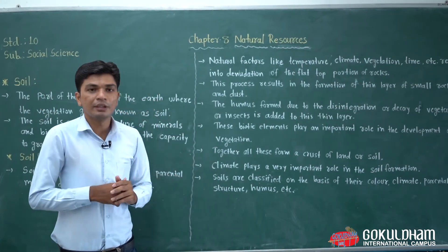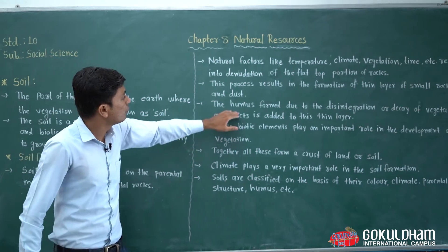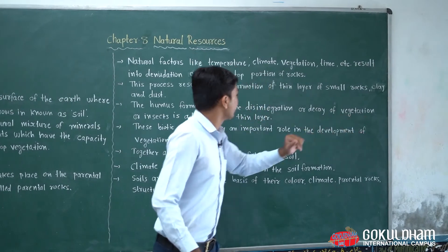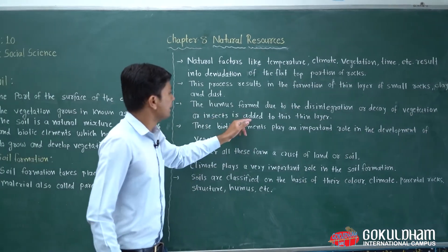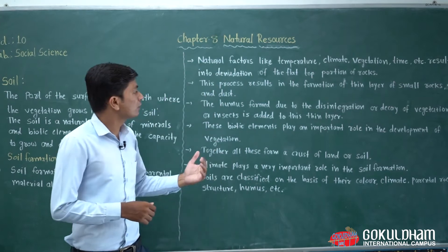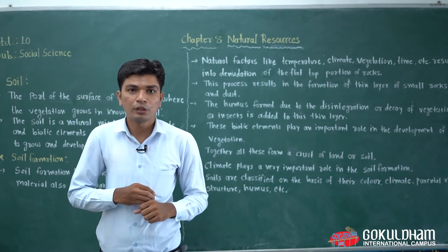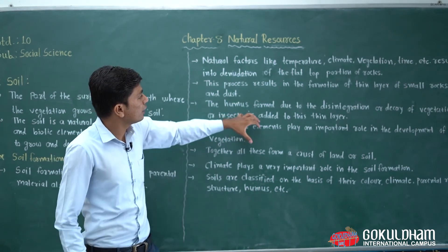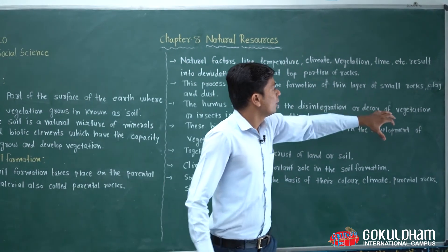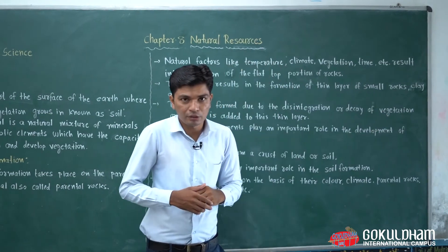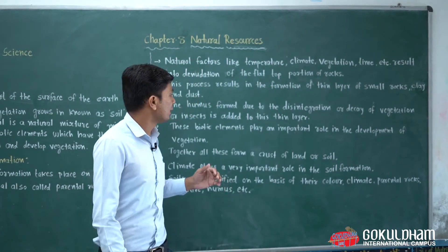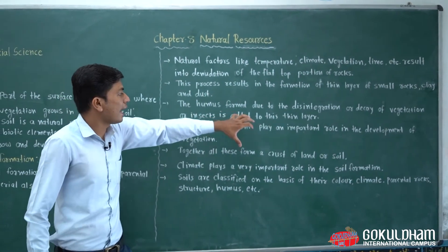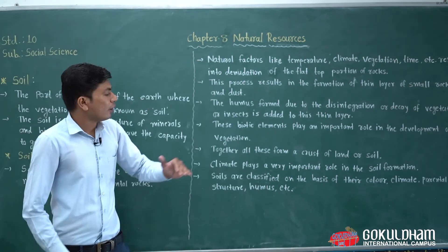Humus is formed due to the disintegration or decay of vegetation or insects and is added to this thin layer of soil. Humus is one of the most important elements for the formation of soil, formed due to the decomposition of vegetation.